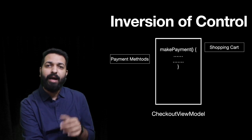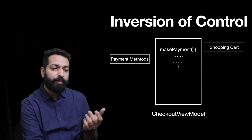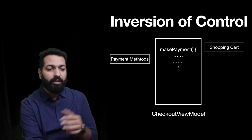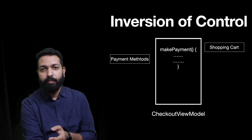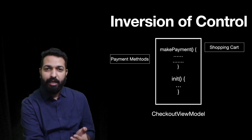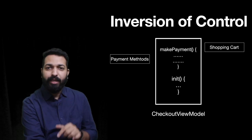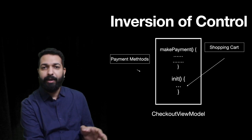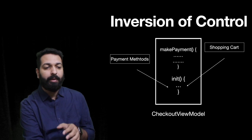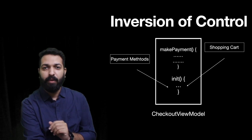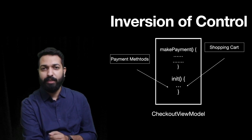Now comes the point of how it will get payment methods and shopping cart, because it is dependent on them. We will write an initializer and through that initializer we will be injecting these two dependencies — payment methods and shopping cart. Let's write the code for this.